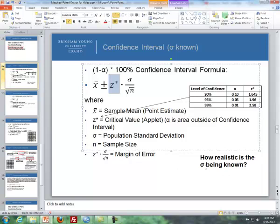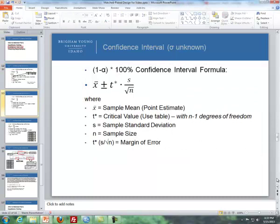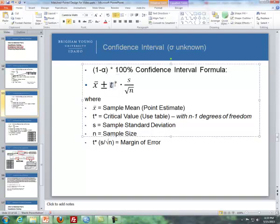But how realistic is sigma, our population standard deviation, being known? Well, it's not very realistic, so therefore we use what's called a one-sample t confidence interval, or a one-mean sigma unknown confidence interval. We deal with the t distribution, and we use s, our sample standard deviation, to estimate our population standard deviation. But instead of doing this by hand or using a calculator, we'll be using Excel or SPSS to calculate the one-sample t confidence interval.